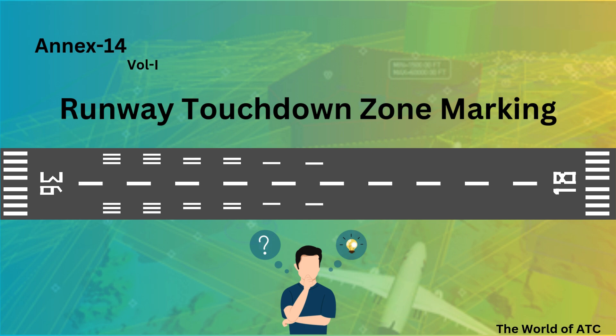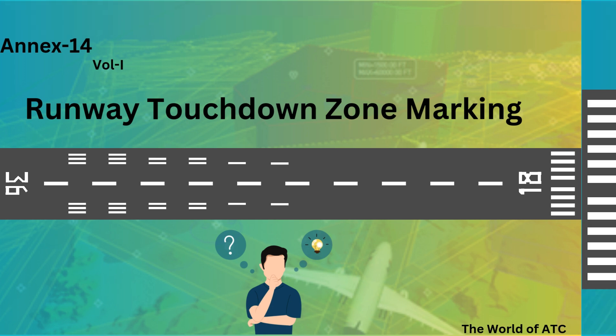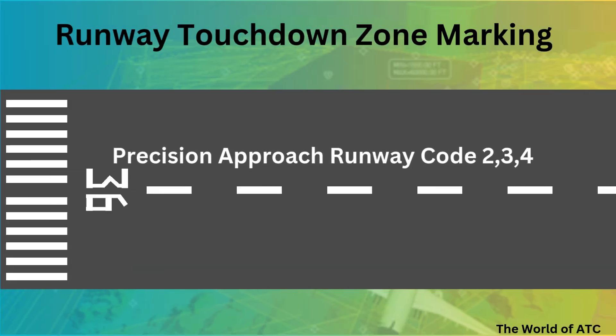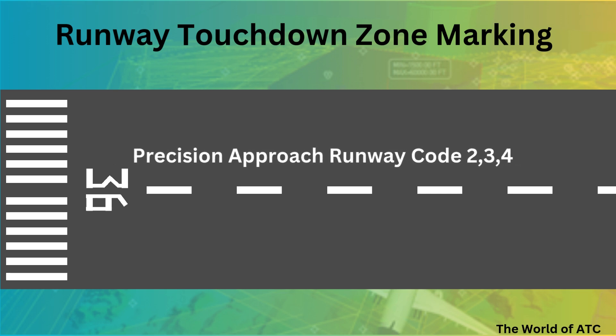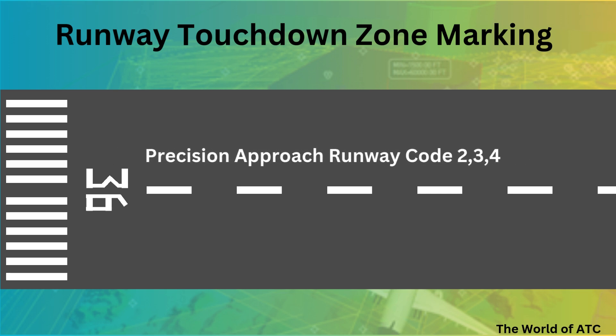Today we will study the touchdown zone marking. A touchdown zone marking shall be provided in the touchdown zone of a paved precision approach runway where the code number is 2, 3, or 4.